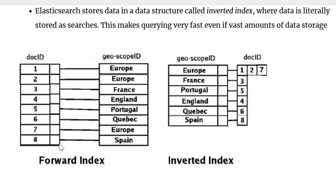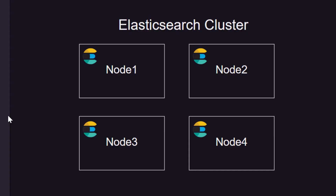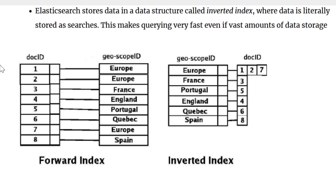Why should we use Elasticsearch? One reason is it's a distributed database and horizontally scalable, which is not possible with a relational database. Another thing is Elasticsearch is designed for faster queries. The data is stored in a way that makes queries really fast, even with huge amounts of data.